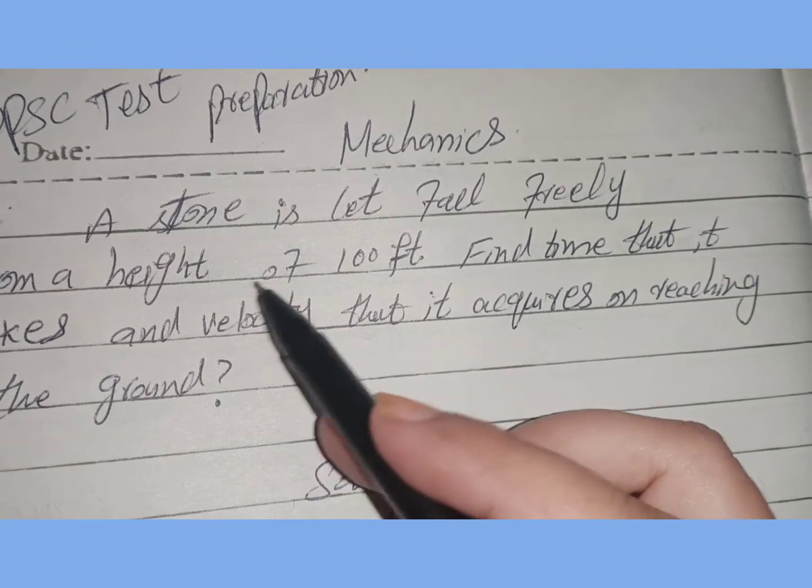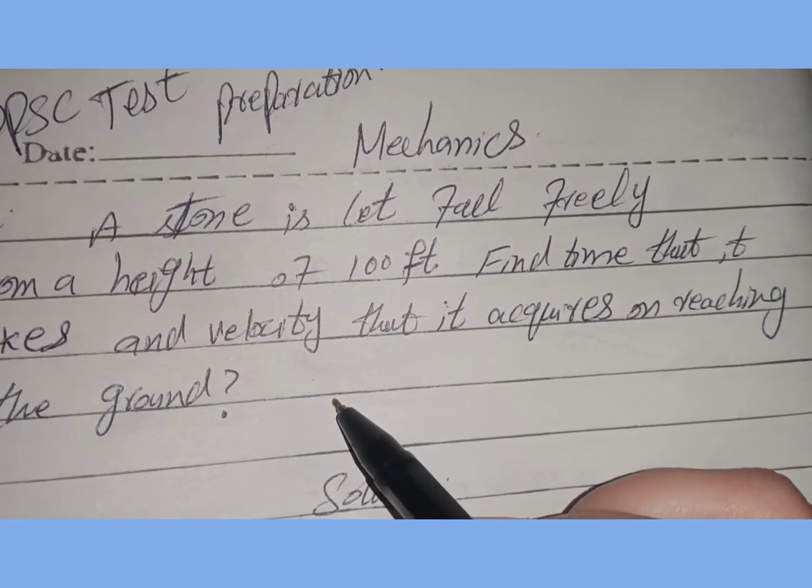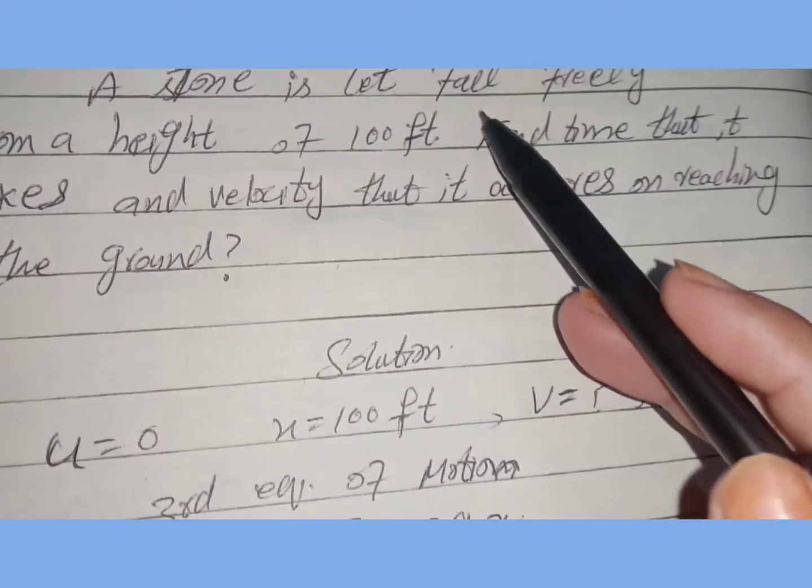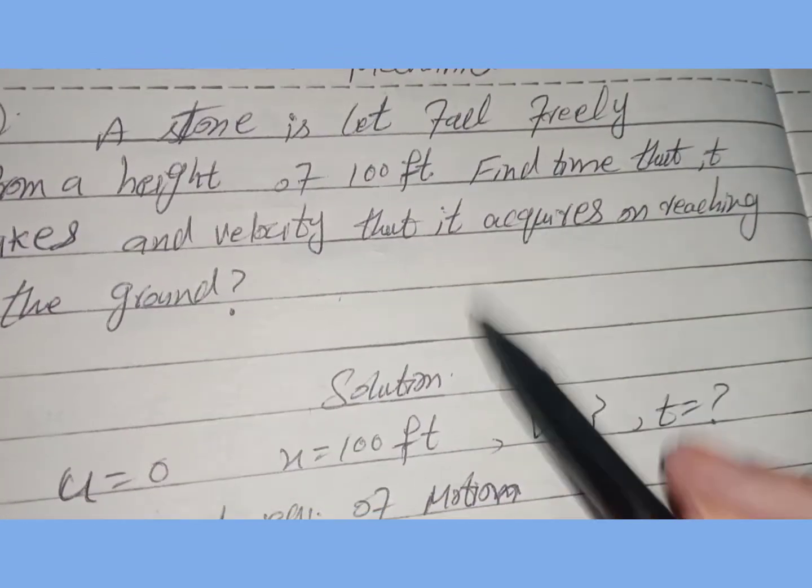A stone is dropped 100 feet from the height. Find time and velocity when it reaches the ground. We will solve this question. Initial velocity u is zero and the height x is equal to 100 feet.